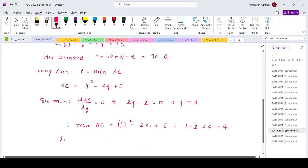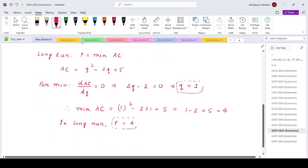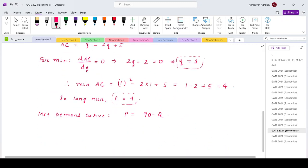So that means in the long run, the price would be equals to 4 in the market. P equals 90 minus capital Q, right?